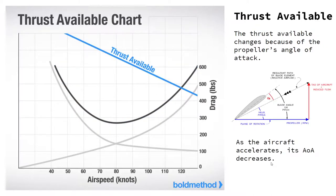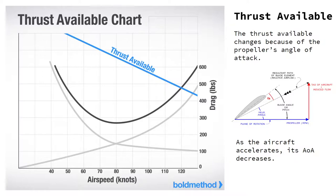Another line we can put on the same chart is the thrust available — how much thrust do we actually have? The reason it's a curve is because as we accelerate, the thrust available reduces. Why is that? Simply, it's because propellers are little wings — nothing more than little wings. They produce lift as well, so the lift formula applies to propellers. But as we accelerate through the air, the relative airflow causes a lower and lower angle of attack. And as we know from the lift equation, when we reduce angle of attack we reduce lift — and in our case, lift being thrust. So as we accelerate, thrust available reduces.